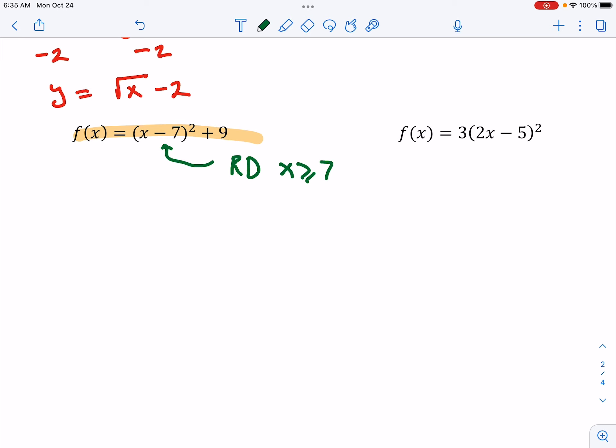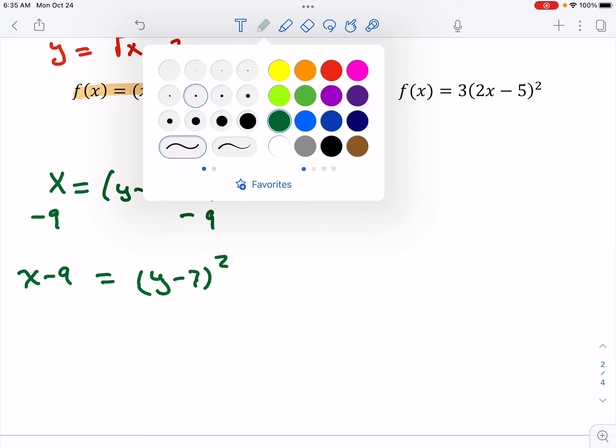So we switch our x and our y. We switch our x and our y. We get the squared portion by itself.